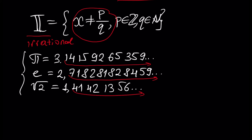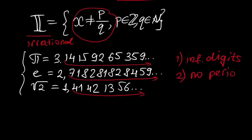Let's write the two properties: first, infinite digits, and second, no period. It is obvious that these numbers are not of the two kinds of decimal representations that rational numbers have. That is why these numbers are not rational — they are irrational.